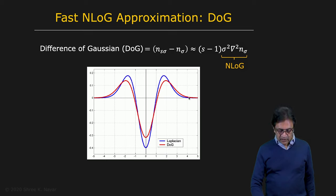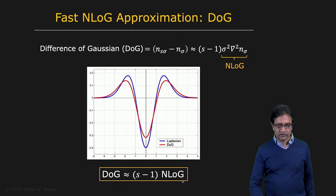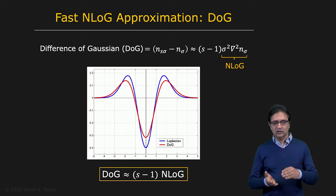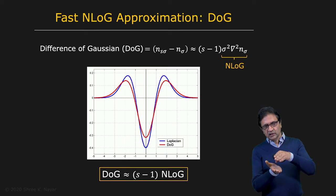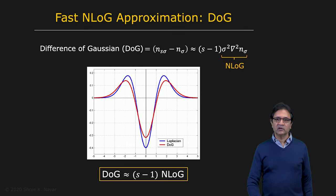Here you see the red curve is the difference of these two Gaussians for some S that's chosen, and the blue curve is the Laplacian of Gaussian — pretty close. So what that means is that the difference of Gaussian is just a scaled version of the normalized Laplacian of Gaussian. It's very useful because now, rather than computing the normalized Laplacian of Gaussian, you can simply take your stack of images — the original image smoothed with different sigmas — take any two consecutive images, and find the difference between them.